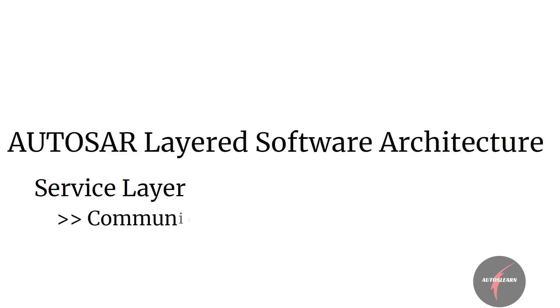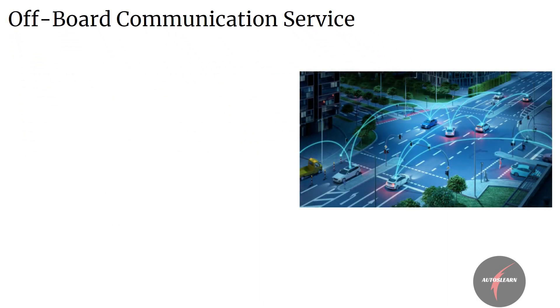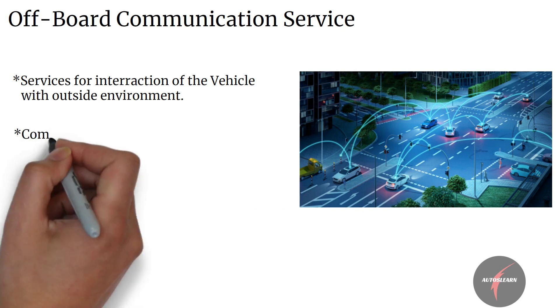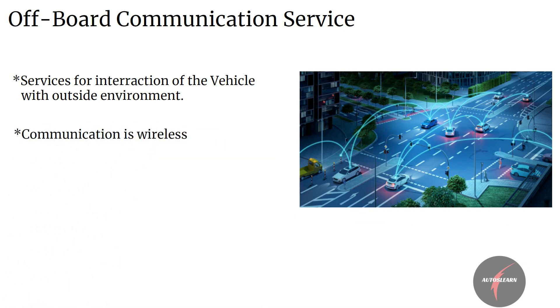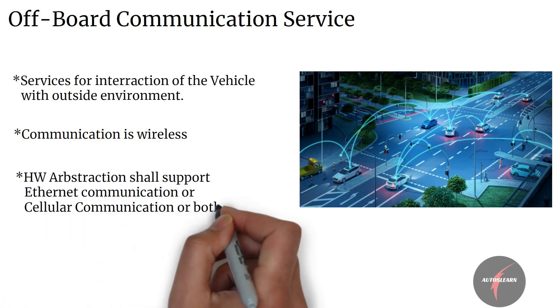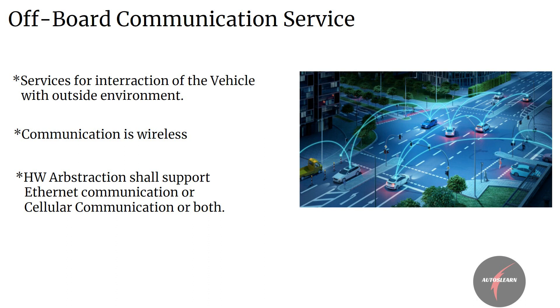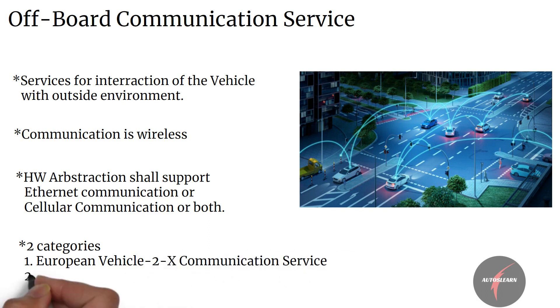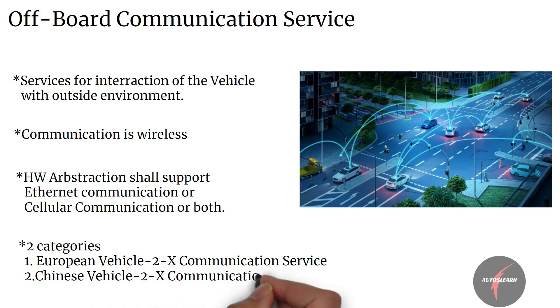After getting an understanding on the communication service of the service layer, now let's have a look into off-board communication service. Off-board communication service provides the services necessary for the interaction of the vehicle with the outside environment. The communication is predominantly wireless, hence the underlying hardware abstraction is also wireless — either Ethernet communication, cellular communication, or both. Off-board communication service architecture can broadly be classified into two categories: European Vehicle-to-X communication service and Chinese Vehicle-to-X communication service.